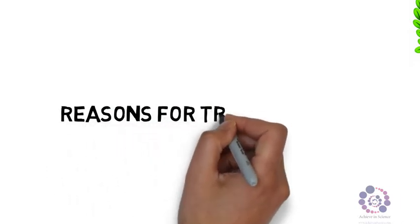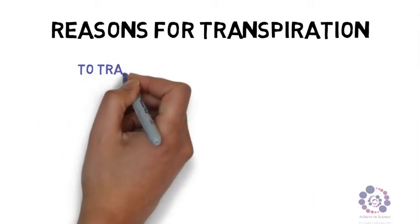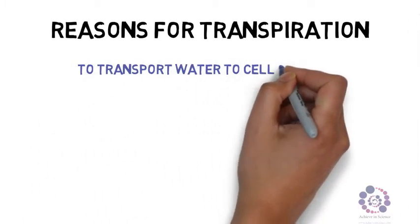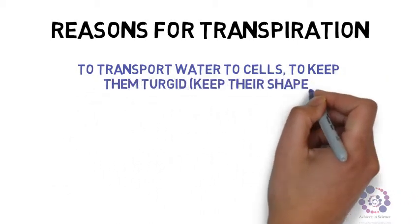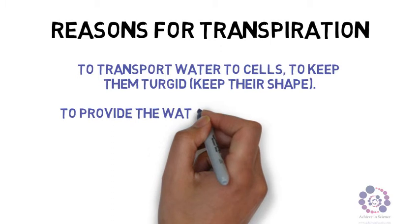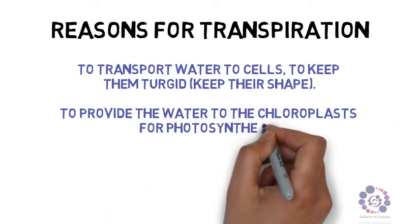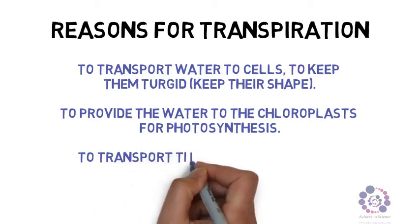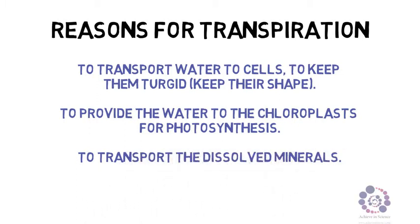Now there are reasons for transpiration. The main reasons are to transport water to cells to ensure that they keep their shape, i.e. they are kept turgid. It provides water to the chloroplasts for photosynthesis to occur. And dissolved minerals can also be transported via water.